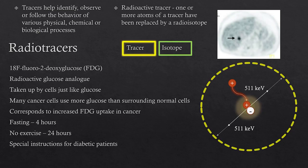Since FDG is a glucose analogue, we typically ask patients to fast for about 4 hours, and not to exercise for preferably 24 hours prior to the scan, to avoid uptake in the muscles. We also give special instructions for diabetic patients, because they have altered glucose metabolism.